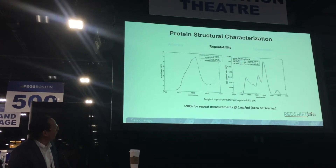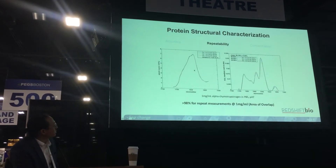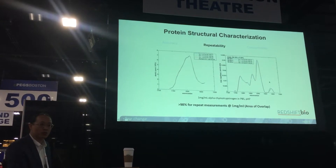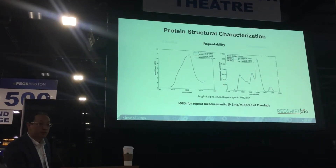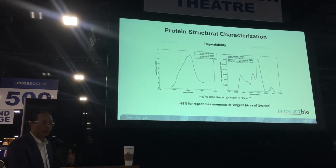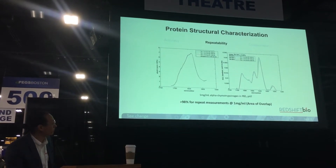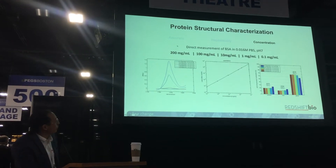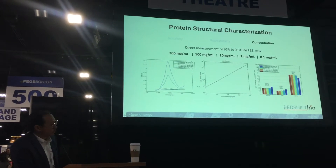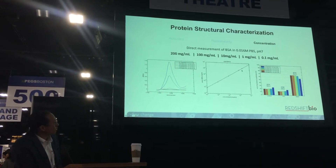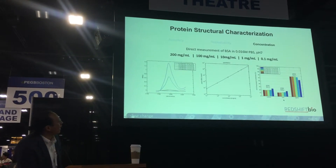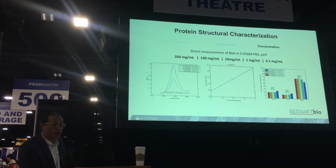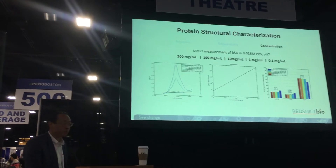What about repeatability? Looking at the absorbance of alpha-chymotrypsinogen at 1 mg/mL — this is the IR data shown as an area of overlap plot, essentially a glorified second derivative — at 1 mg/mL we routinely get a value of better than 98% area of overlap, which is excellent. For anyone who's done IR methods, this is a very good number. For concentration range, looking at BSA from 200 mg/mL down to 0.1 mg/mL, the quantitation plot is very well behaved, and the secondary structure — extended states, beta turn, alpha helix — is very, very consistent across all concentrations. The only slight outlier is the 0.1 mg/mL sample, which is a little bit noisier, but still very consistent.